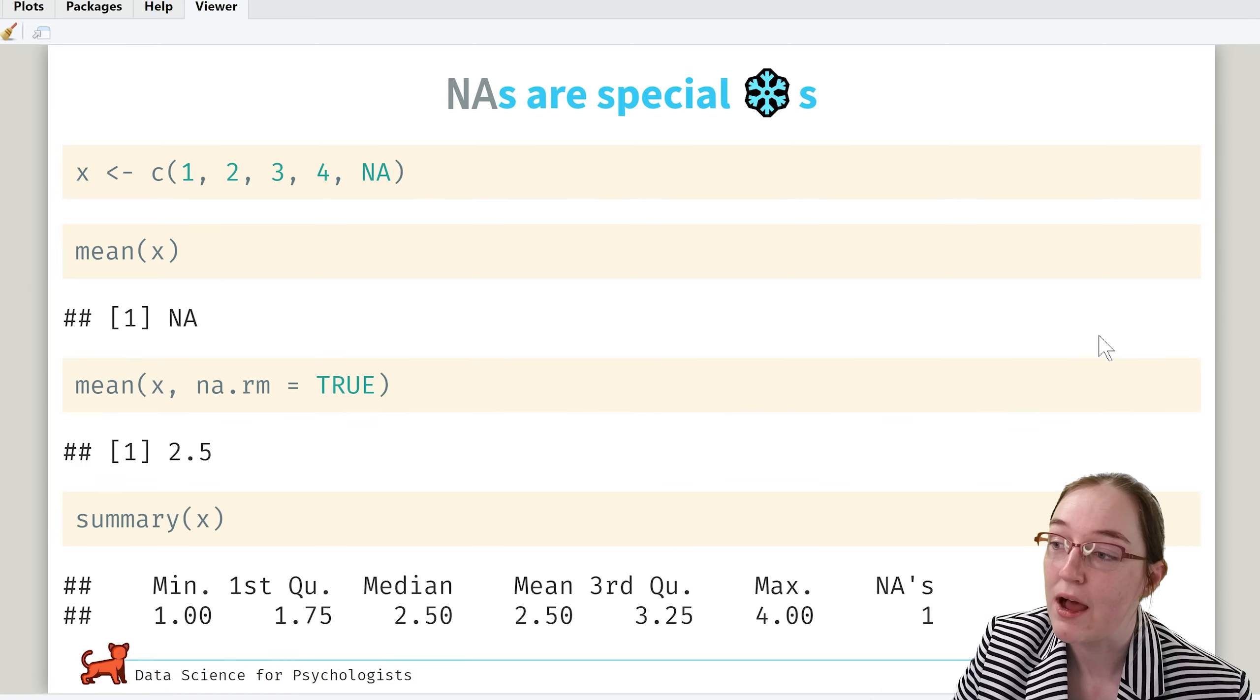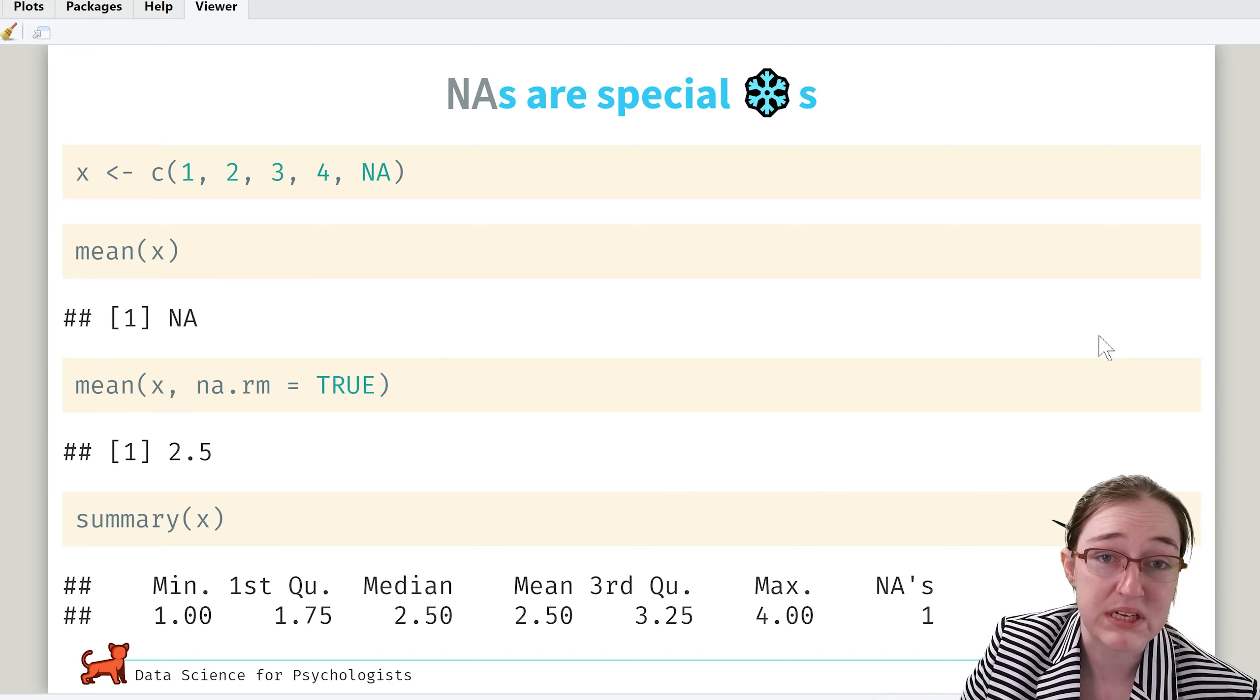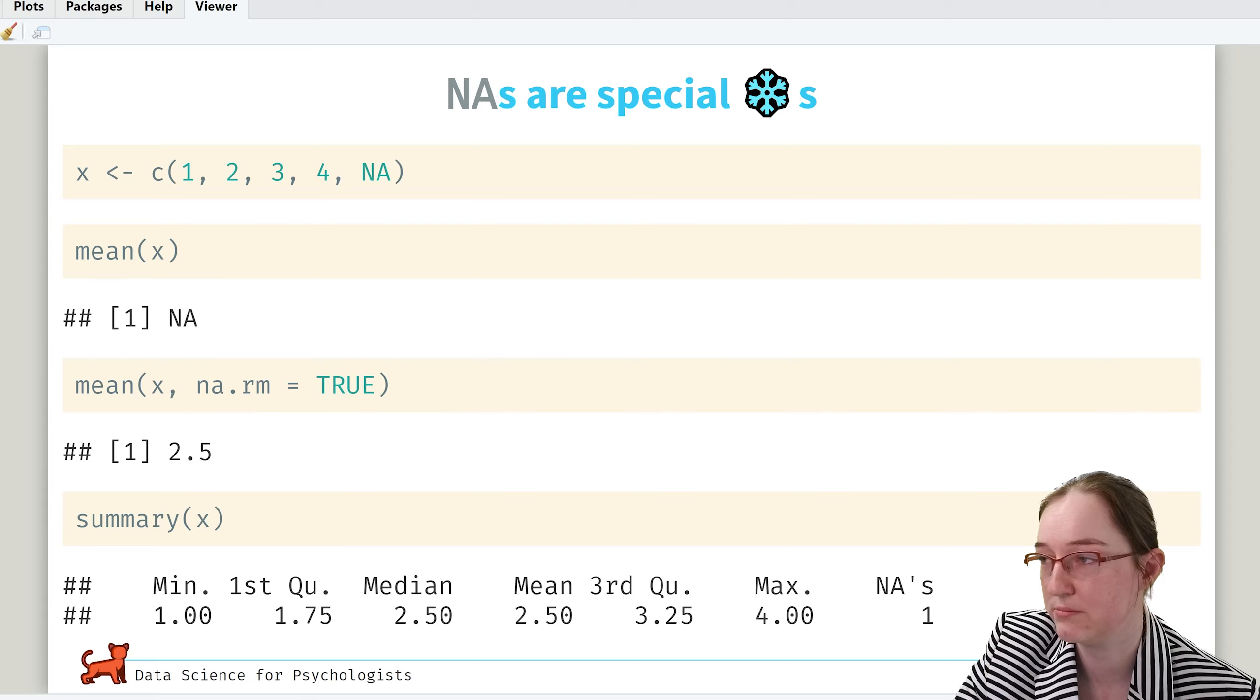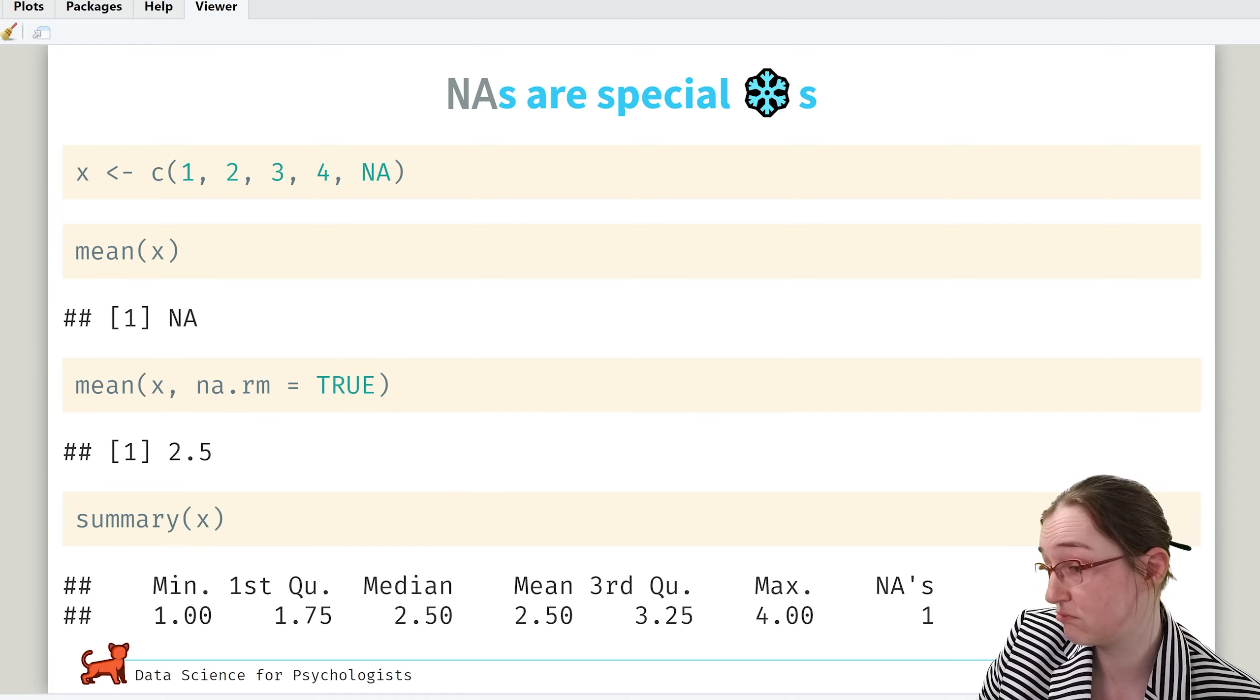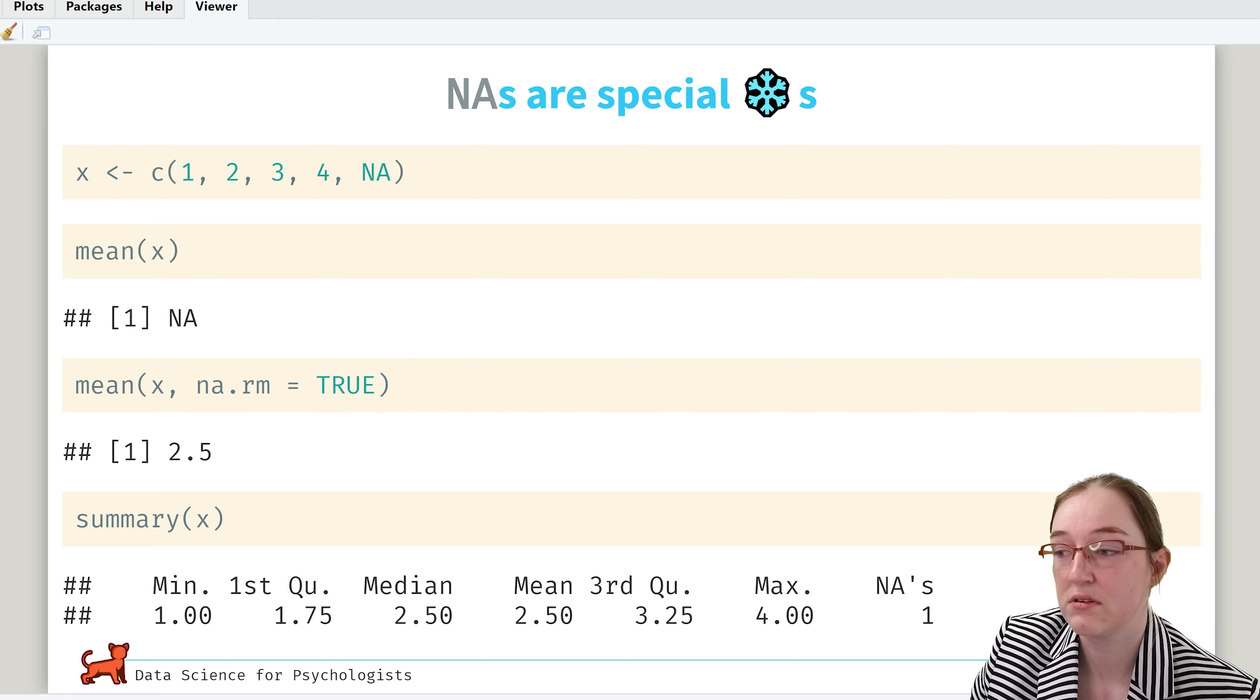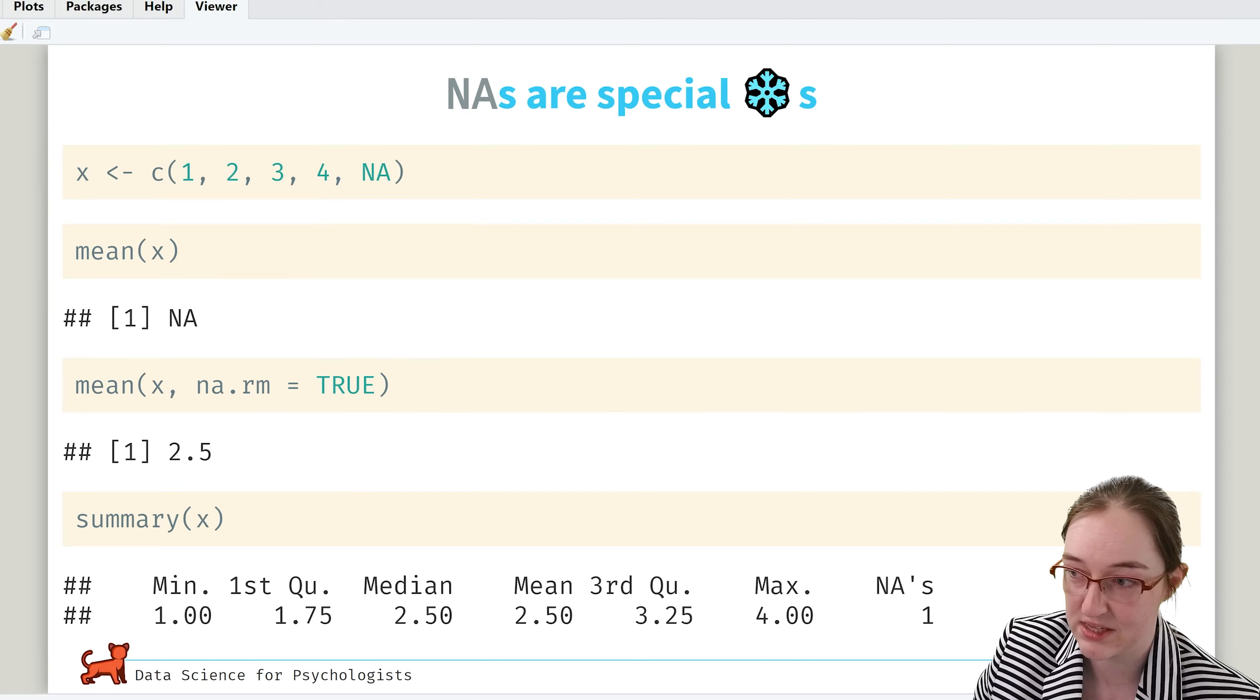So when we take the mean of that, we get NA, because NA just ruins everything. It's quite irksome, to be honest. Because many functions in R just do not like missing data. And if you give it any missing data, it just doesn't. And the defaults are essentially to freak out at missing data.